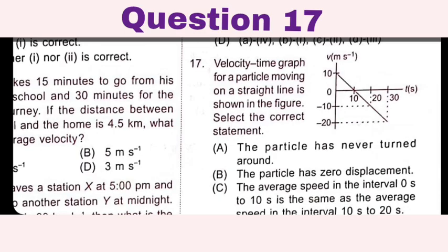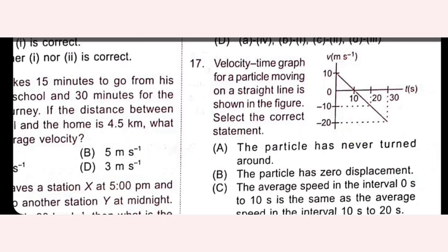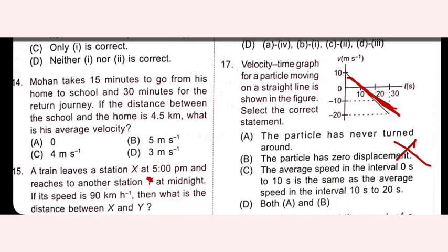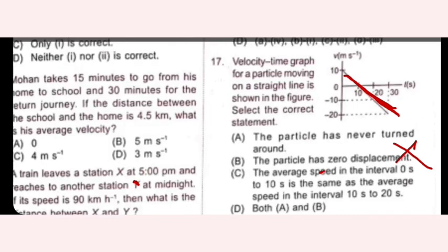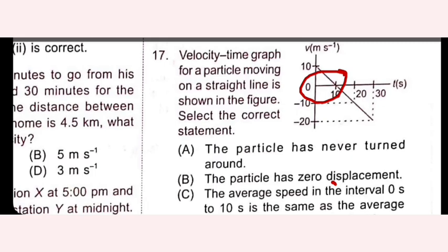A velocity-time graph for a particle moving on a straight line is shown. The particle has never turned around — incorrect, because velocity goes negative, indicating a direction reversal. The particle has zero displacement — also not necessarily correct. The average speed in the interval 0s to 10s is the same as the average speed in 10s to 20s. Option C is the right answer.